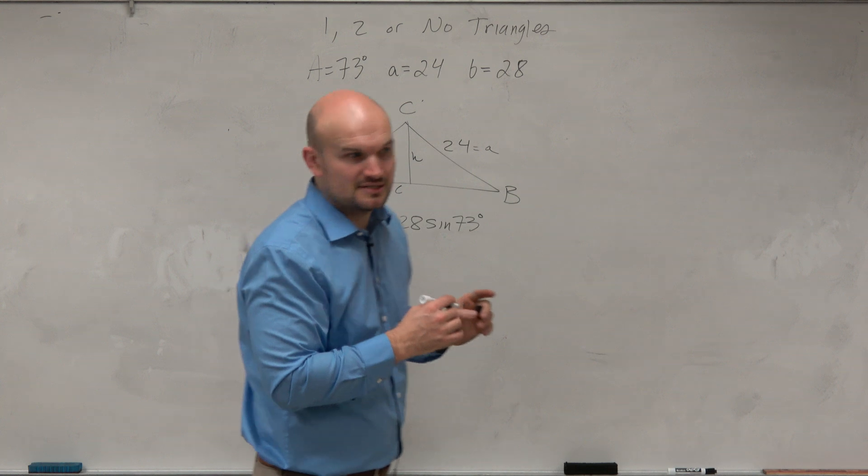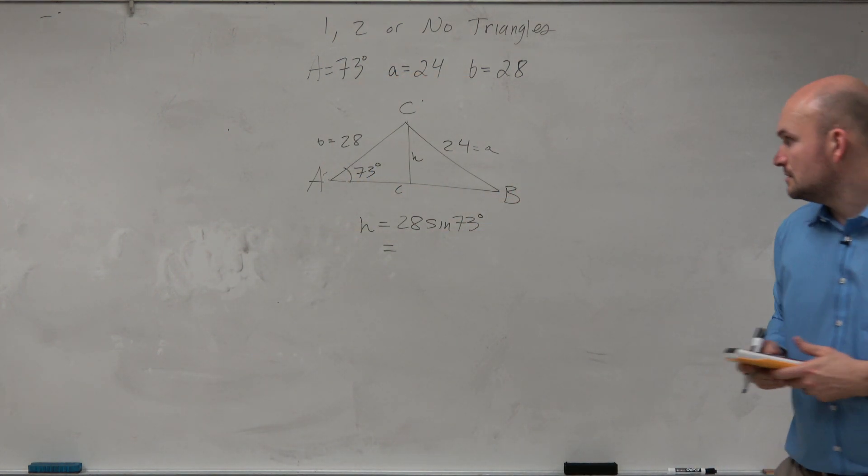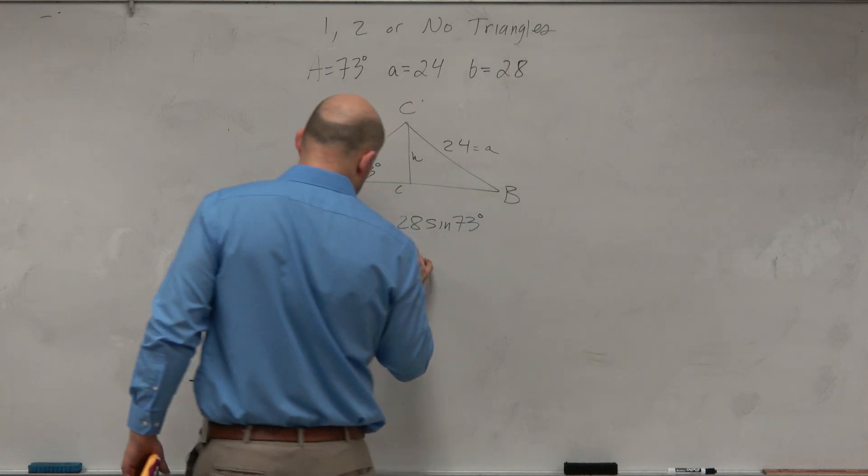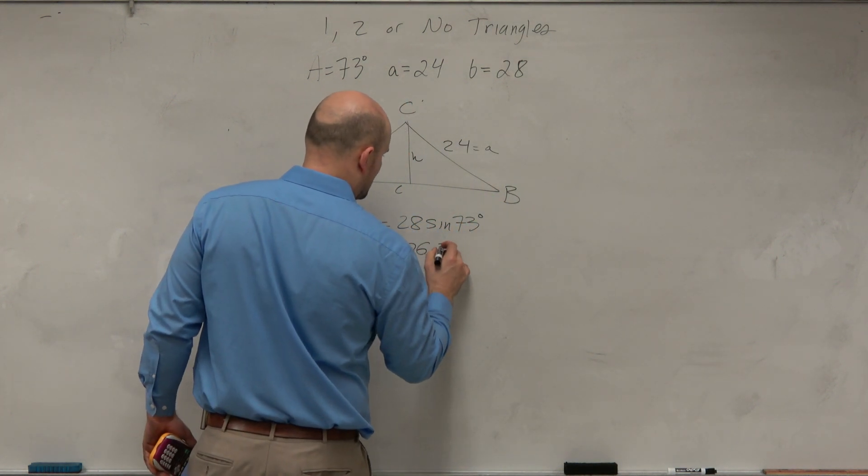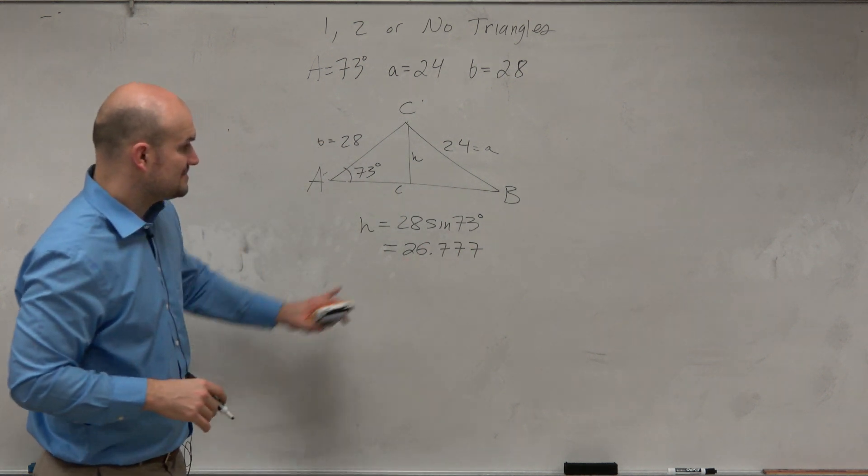And then, since you guys have calculators. Maybe it's 28 times sin 73 degrees. So maybe you guys can help me out. 26.777? OK. Now that's my height.